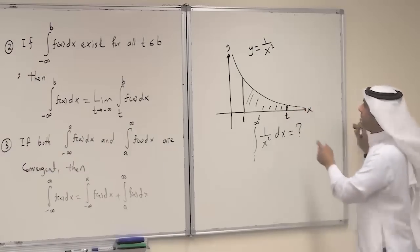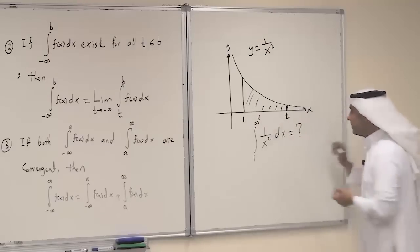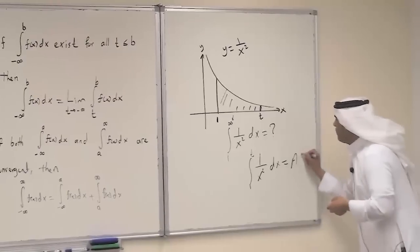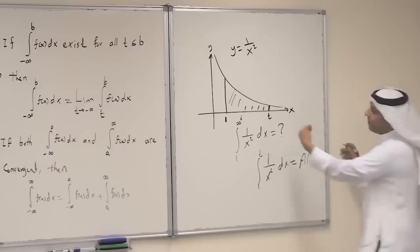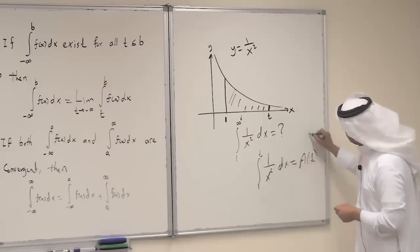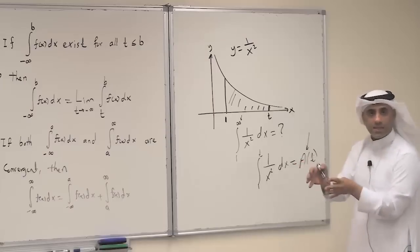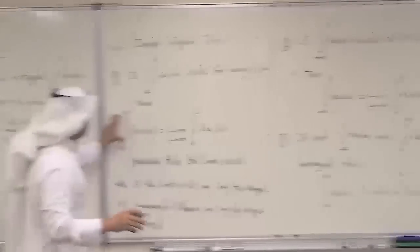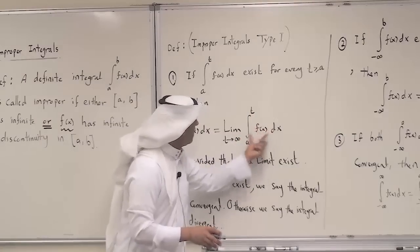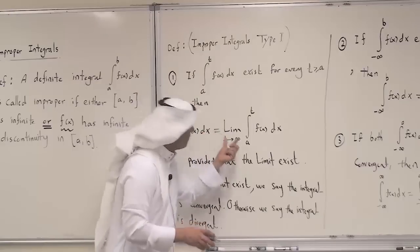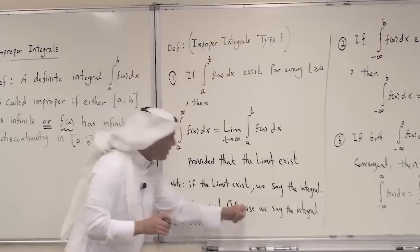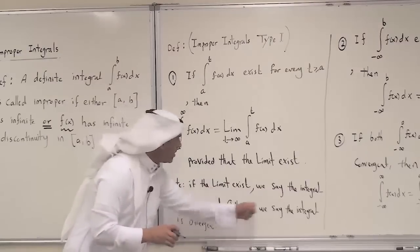Then we push t to go to infinity and see what happens. We have two possibilities: after calculating, the limit of this could exist or could not exist. If the limit exists, we say this integral is convergent and equal to the value of that limit. If the limit does not exist, we say the integral is divergent. Similarly, if you have minus infinity as the lower limit, you remove minus infinity, insert t, calculate from t to b, then push t to go to minus infinity. If the limit exists, the integral is convergent; if not, it is divergent.